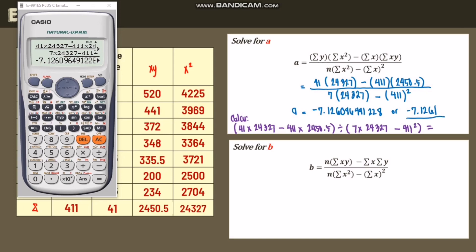So this is our a. And then let's compute b. So we have n equals 7. Summation of xy is 2,450.5. Minus summation of x is 411. Times summation of y is 41.